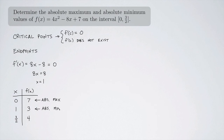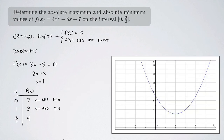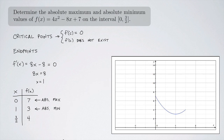We did this all without graphing, but we can look at the graph of the parabola. Remember, we're only concerned about the interval 0 to 3/2. On this interval, we can see the minimum value occurs at x = 1 with a value of 3, and the absolute maximum is at x = 0 with a value of 7.